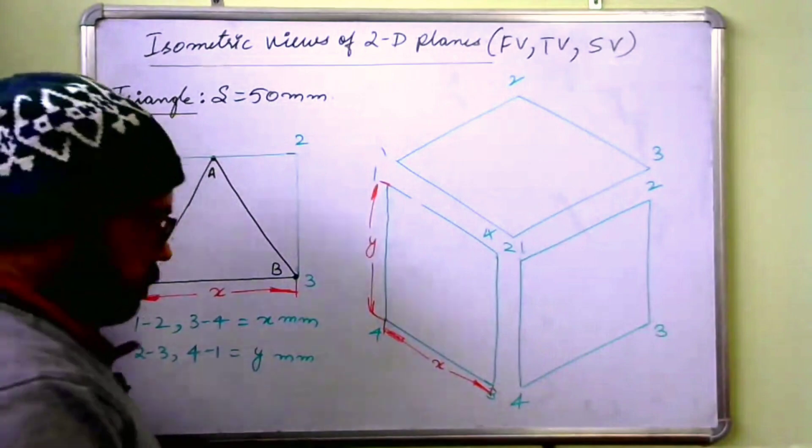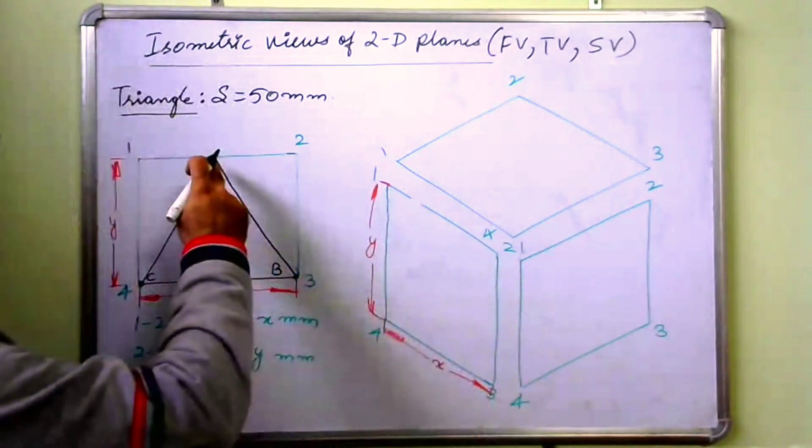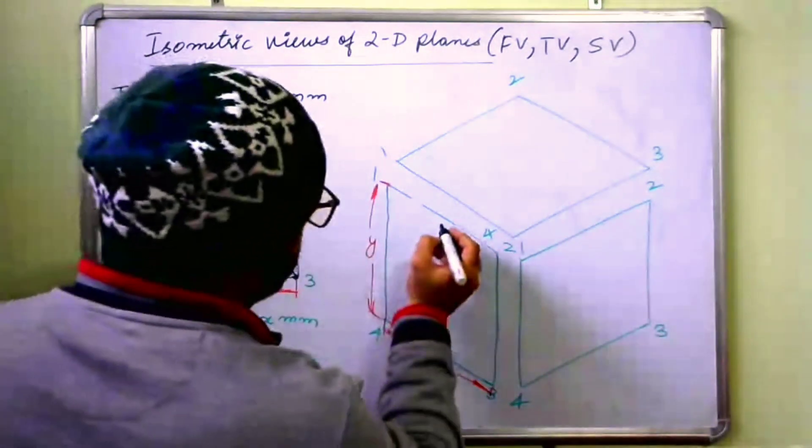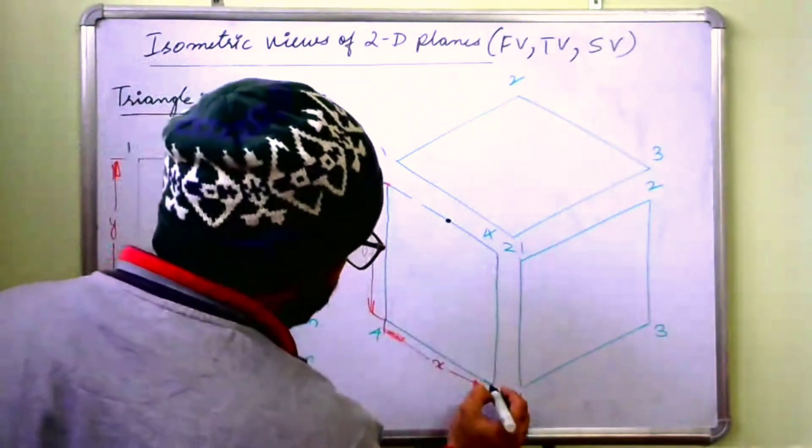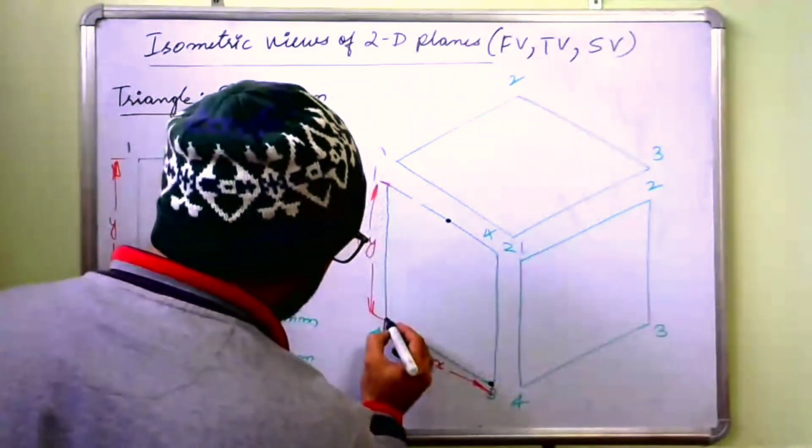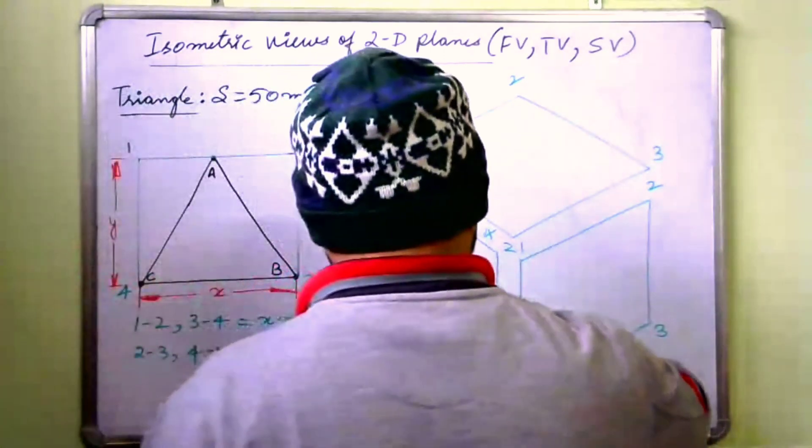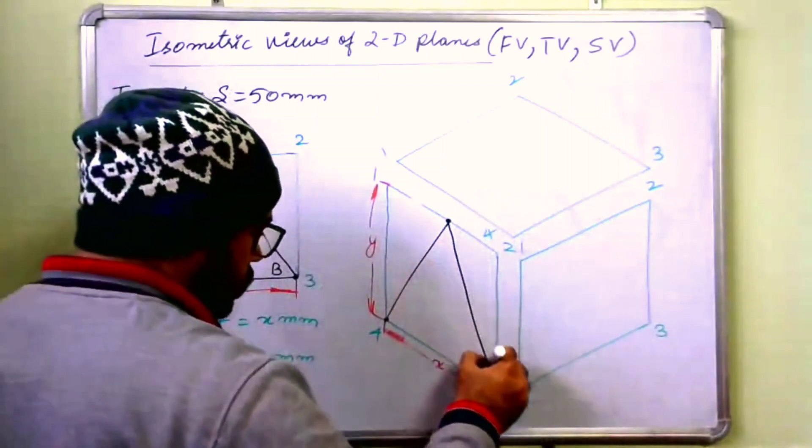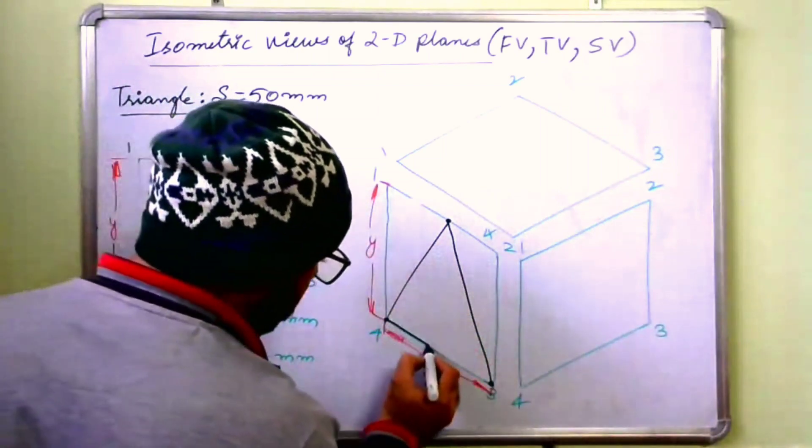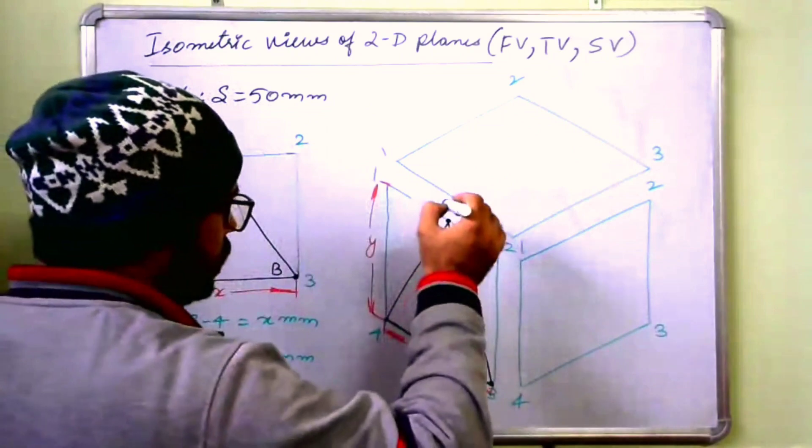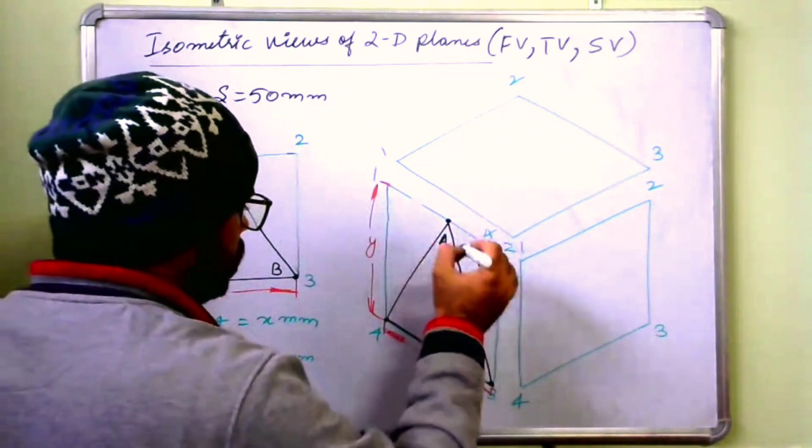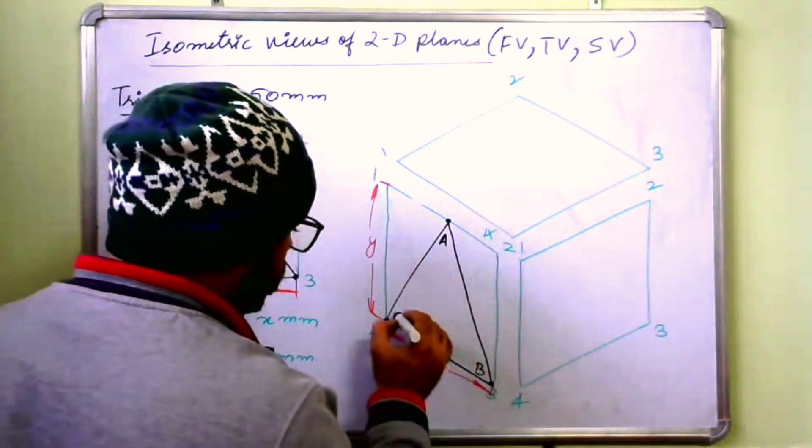Now what you need to do is, just mark points a, b and c on these. Let us say this is a, this is a, this is b and this is c. Like this you will be doing it. Let us say this is a, this is a, b and c.